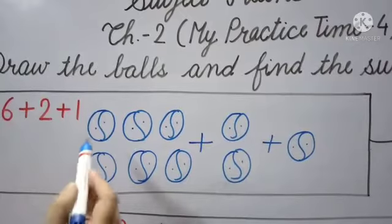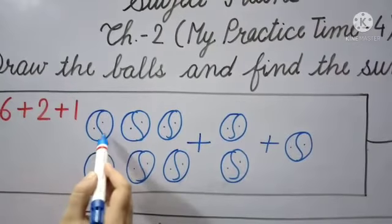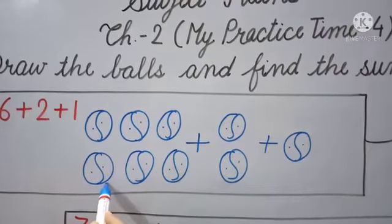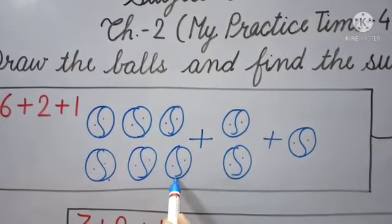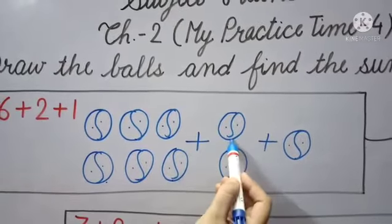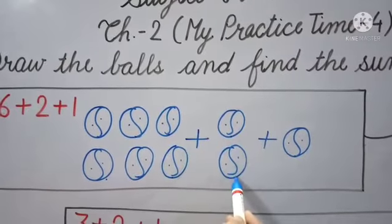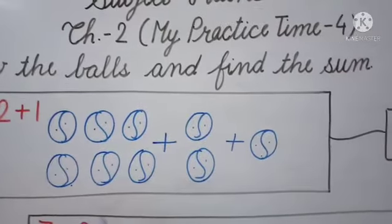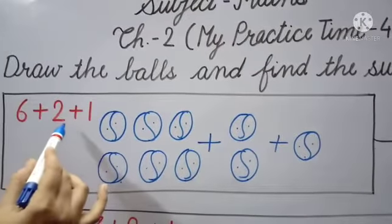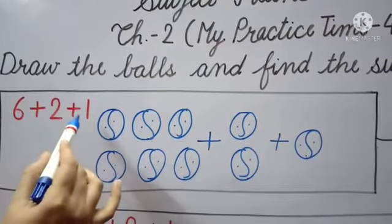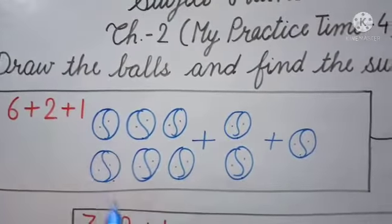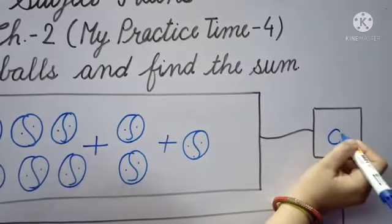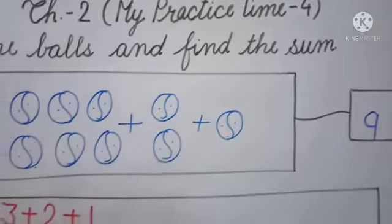Now count these balls together — everyone count with me: 1, 2, 3, 4, 5, 6, 7, 8, 9. The answer is 9. So 6 plus 2 plus 1 is equal to 9, and here we write the number 9.